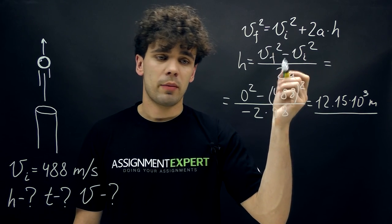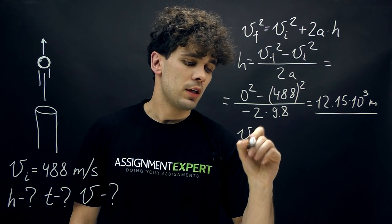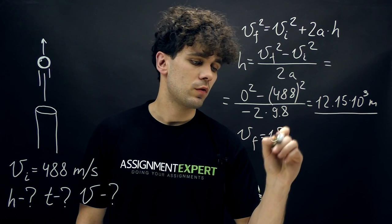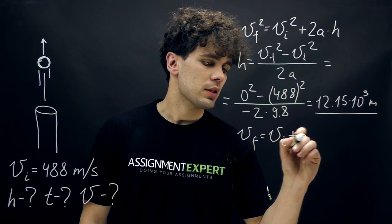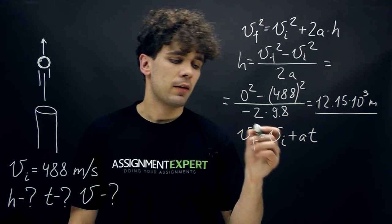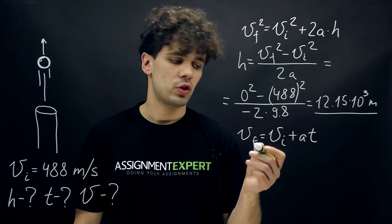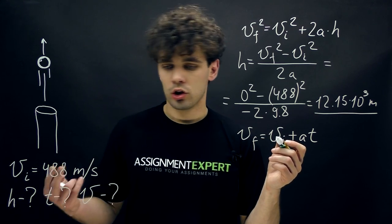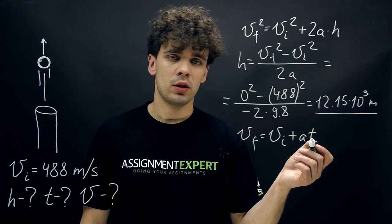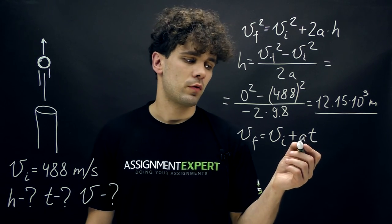For that we need to use another kinematic equation: Vf equals Vi plus At. Again, Vf is the final speed which is zero. Vi is the initial speed. A is the free fall acceleration, and T is obviously the time we're searching for.